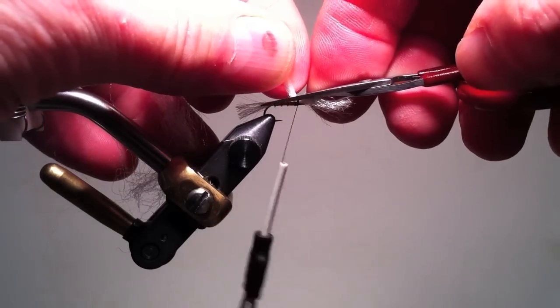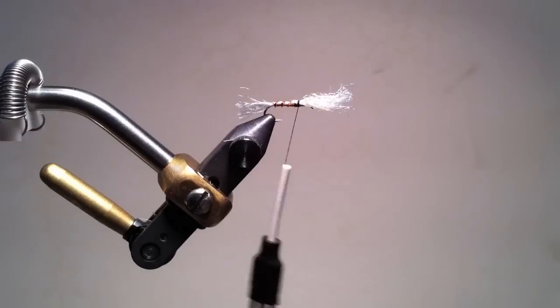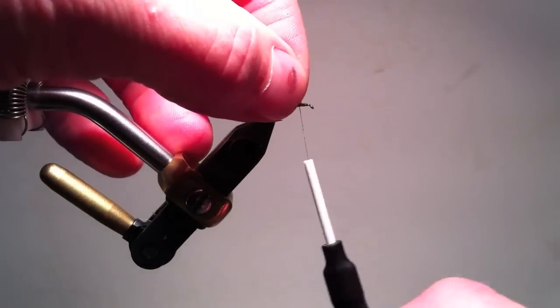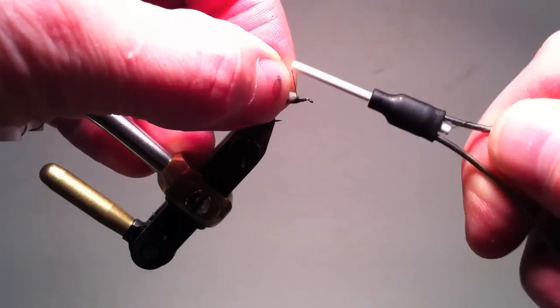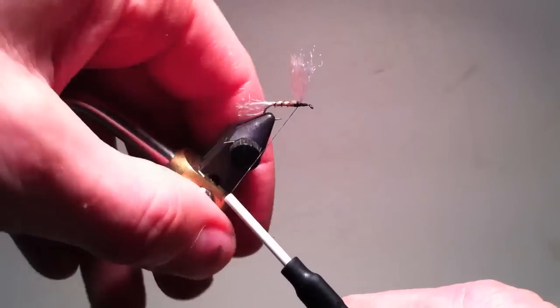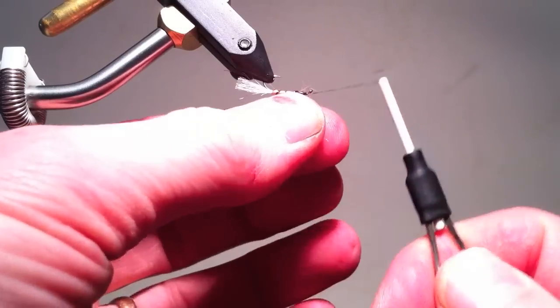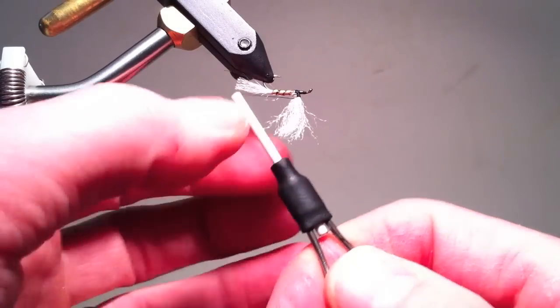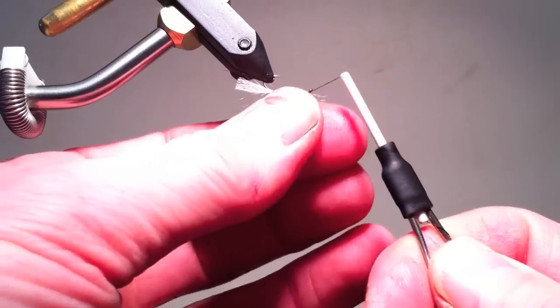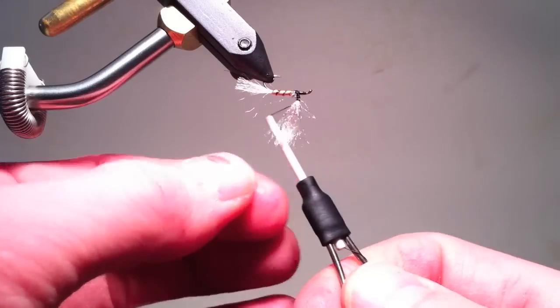I put the wing on, leaving the wing longer than what I ultimately want, cut off the base, and post up the wing as we've shown before. Again, I feel that turning the fly so it's upside down using the rotary vise makes winding the post much easier.